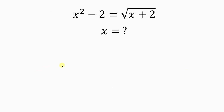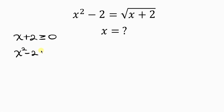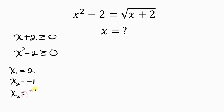Remember the given conditions: the square root is positive and must be a real solution, so x plus 2 must be bigger than or equal to 0. Also, the left-hand side — x squared minus 2 — must also be bigger than or equal to 0, since it equals a positive square root. So we have four roots to check: x equals 2, x equals negative 1, x equals negative 1 plus square root of 5 over 2, and x equals negative 1 minus square root of 5 over 2.